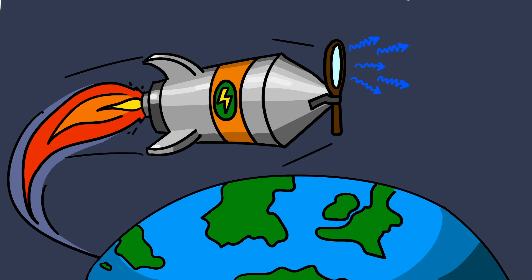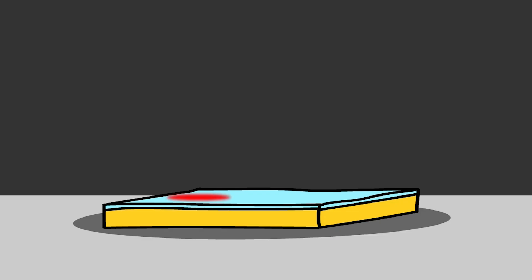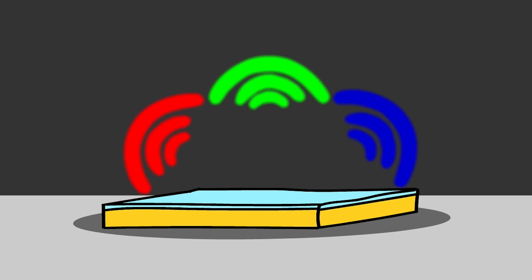Now back to the experiment. If we make the mirror move slower than the speed of light, we observe the Doppler effect. Blue light is scattered forward while red light is scattered backward.